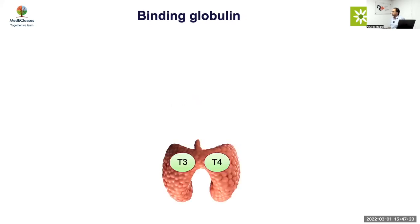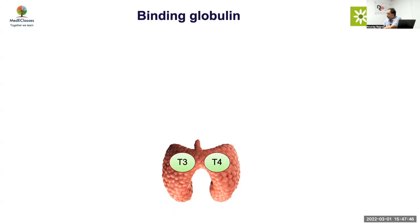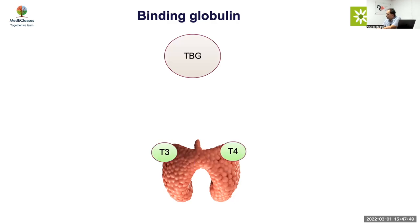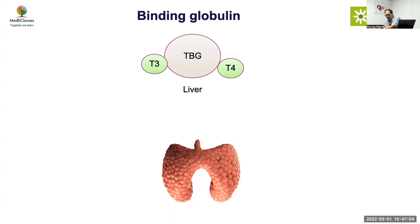Once the thyroid hormone is produced it will have to go into the circulation. Thyroid is basically a lipophilic hormone - it cannot go in the circulation freely. Like peptide hormones, it can't swim, so you need a big boat to carry them. That's why you have three specific compounds: the thyroxine binding globulin (TBG), which binds to both T4 and T3, is the most important thyroid binding globulin produced by the liver. 75% of all binding happens in TBG.